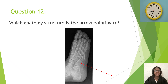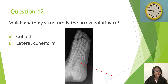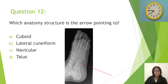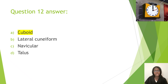Question twelve: Which anatomy structure is the arrow pointing to? A, cuboid; B, lateral cuneiform; C, navicular; D, talus. The correct answer is A, cuboid.